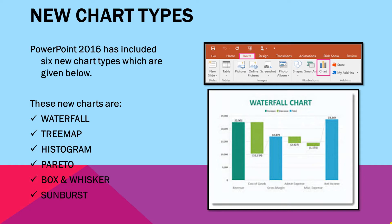Next is new chart types. PowerPoint 2016 has included 6 new chart types which are: waterfall, tree map, histogram, pareto, box and whisker, and sunburst.